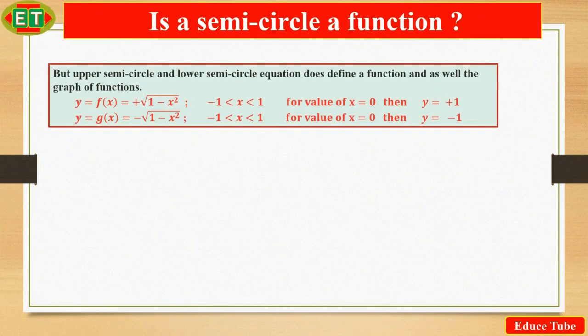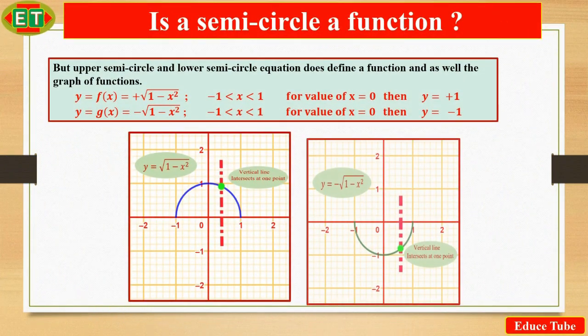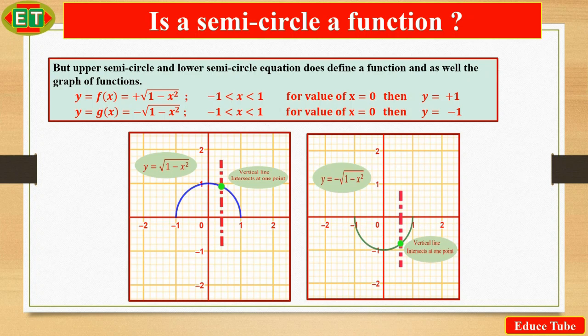But the circle does contain the graphs of two functions of x. The upper semicircle is defined by the function f(x) equal to the square root of 1 minus x squared, and the lower semicircle is defined by the function g(x) equal to minus the square root of 1 minus x squared.